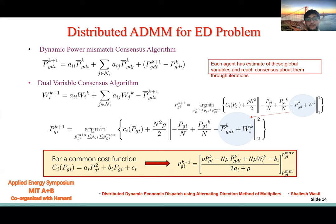For a common cost function, if you differentiate this, then we get PGI k+1 at this value. This is now a completely distributed form of ADMM.